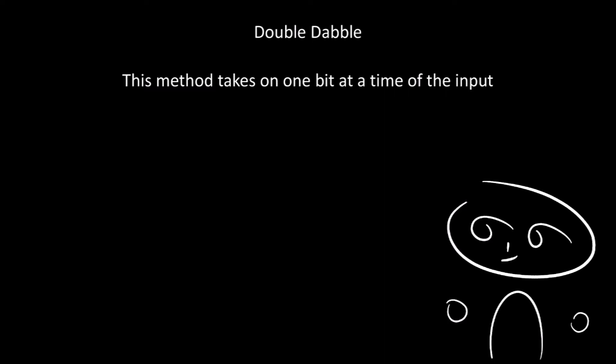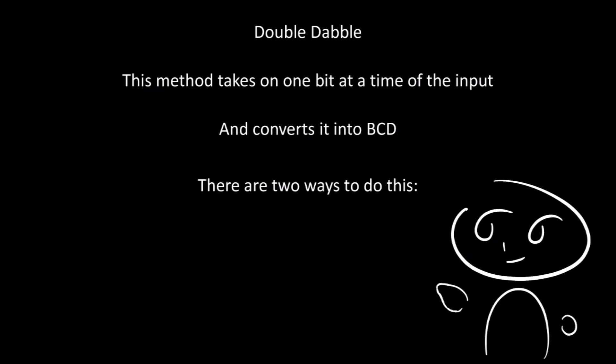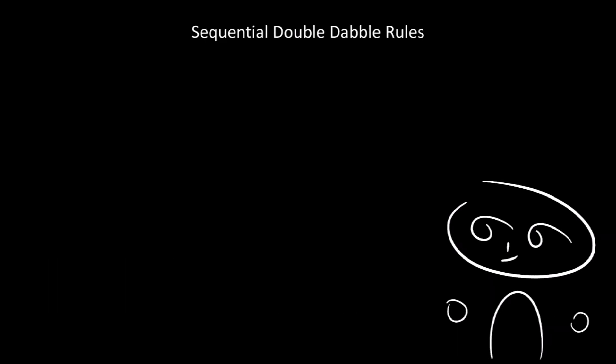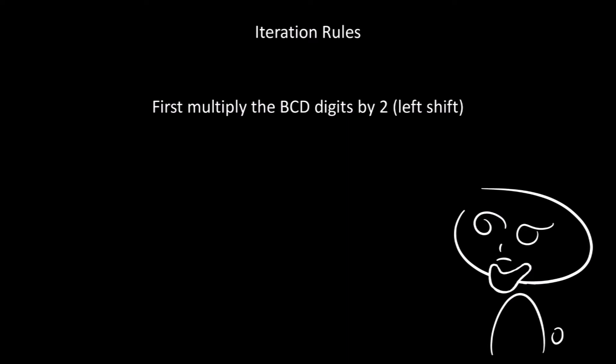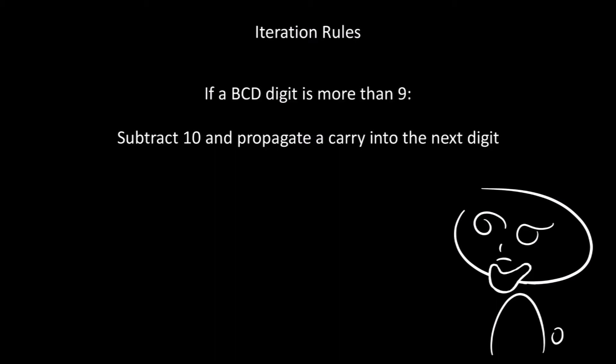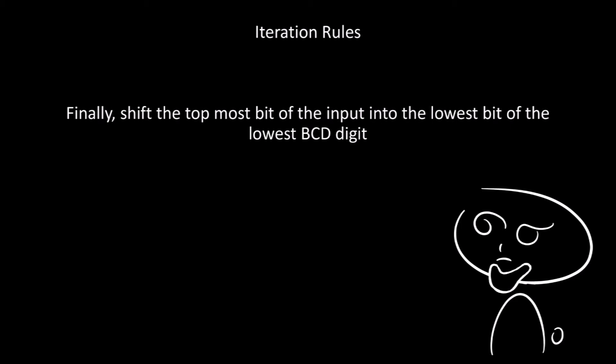The double-dabble method takes on one bit at a time from the input and converts it into BCD. There are two ways of doing this, either sequential or combinatorial. I will do an example using the sequential method. The rules for sequential double-dabble are that you start with the output BCD values all equal to zero. Then you iterate eight times, so once for every bit in the input. The rules for each iteration are that you first multiply the BCD digits by 2, which is simply a left shift. If a BCD digit is more than 9, then we subtract 10 and propagate a carry into the next digit. And finally, we shift the topmost bit of the input into the lowest bit of the lowest BCD digit.